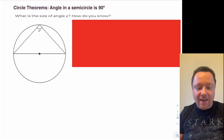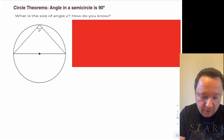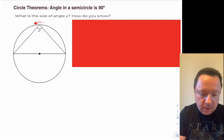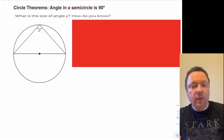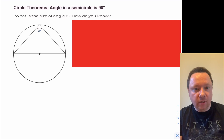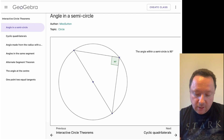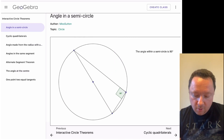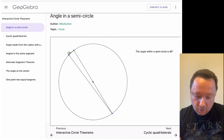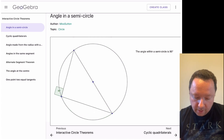The first circle theorem I'm going to look at is the angle in the semicircle is 90 degrees. If we look at this picture here, we'll try to work out what's the size of this angle x and how do we know. I'm going to show you a quick animation to demonstrate this and then perhaps even prove it mathematically, because the proof isn't that hard. And we can see that no matter how much I turn this round a circle, it is always 90 degrees.